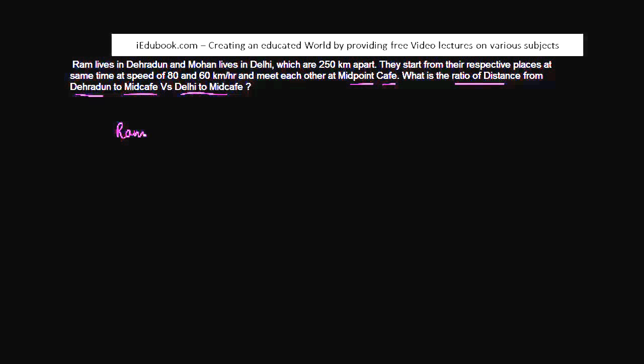You have two people, Ram and Mohan. Ram lives in Dehradun, that's actually the place I come from, and Mohan lives in Delhi, that's the place where I am currently living, which are 250 kilometers apart. So the distance between these two is 250 kilometers.